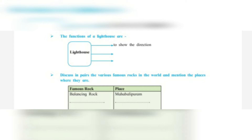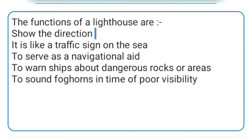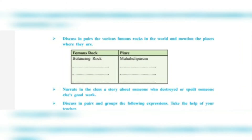Number two: the functions of a lighthouse. Number one, it is like a traffic sign on the sea to serve as a navigational aid. Number two, to warn ships about dangerous rocks or areas. Number three, to sound fog horns in times of poor visibility. These are the functions of a lighthouse.